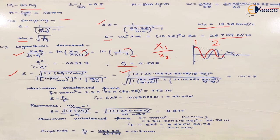Once we have the damping factor zeta, and we already know omega_N and omega, we place the values in the epsilon formula to find transmissibility. The maximum unbalanced force on the system is MRω², where M is the reciprocating mass, R is the radius (50 mm), and omega has been calculated. This gives us the applied force value, and using epsilon we can find the transmitted force.